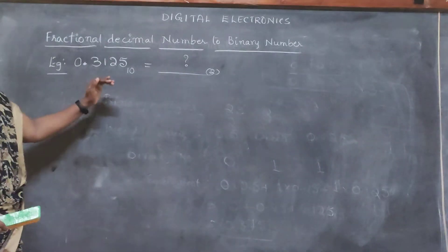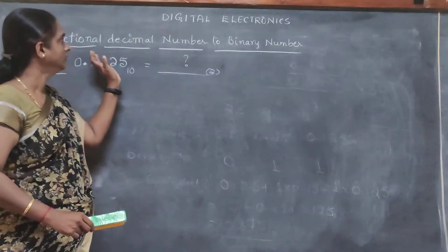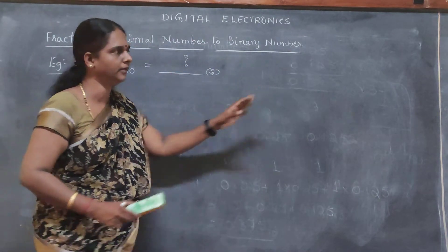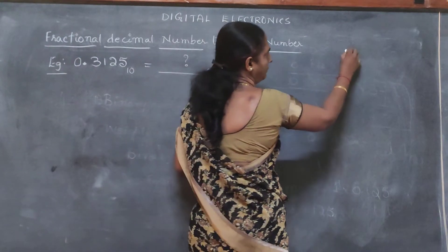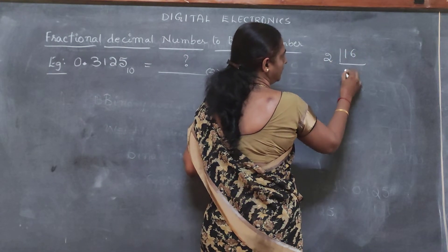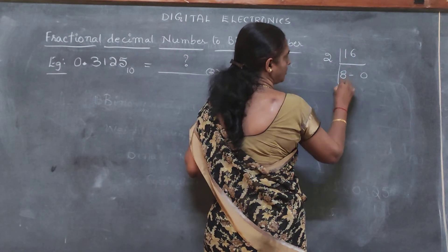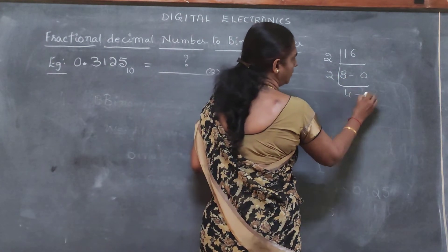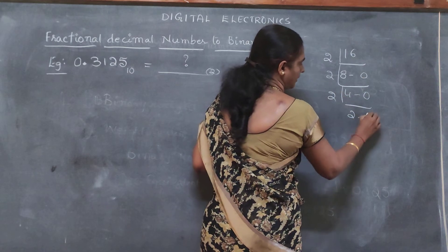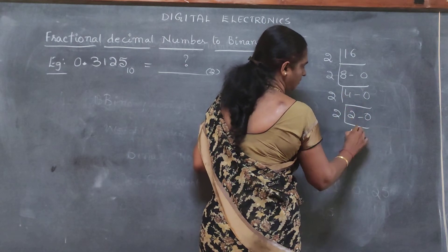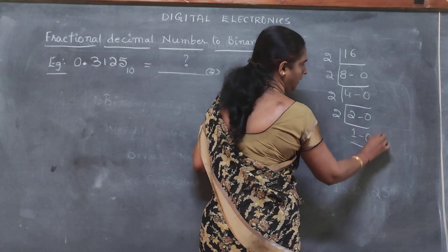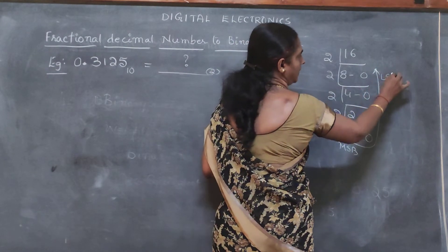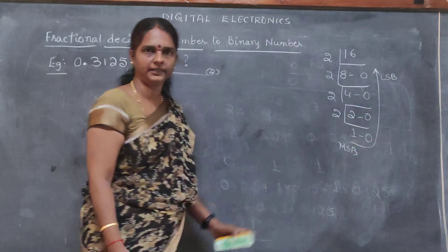Now, to convert a whole decimal number to binary number, we have done the repeated division by 2 method. We found the value including the remainder. This was the MSB and this was the LSB, and we wrote the binary number.